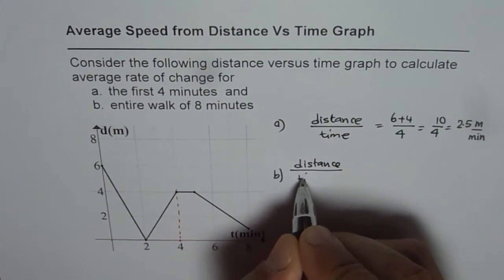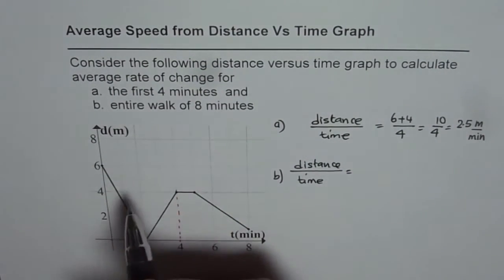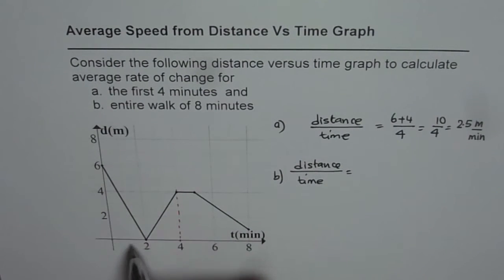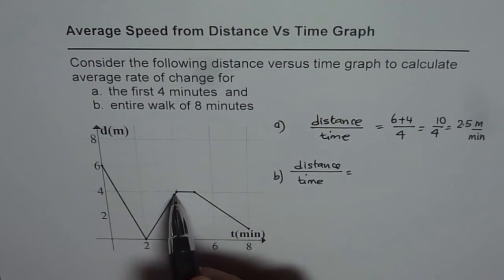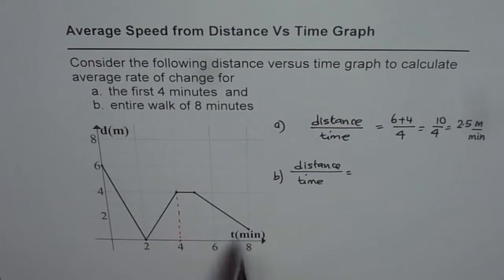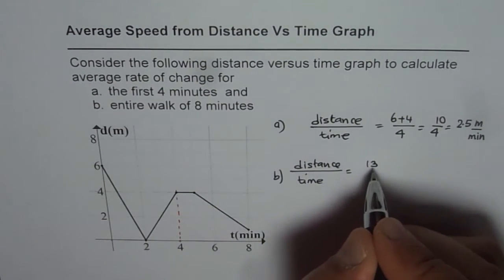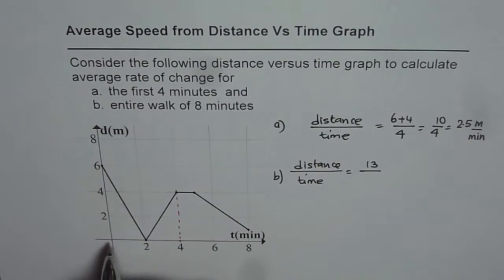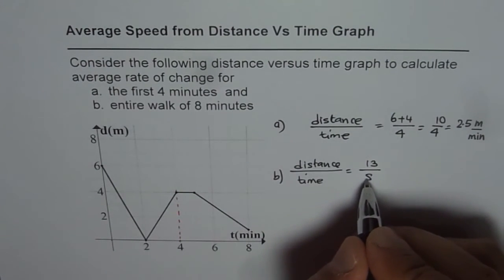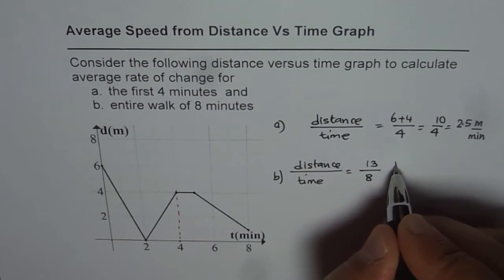It is the same approach: distance over time. Distance is 6 plus 4, which is 10, and then we go down by 3 units. So 10 plus 3 is 13 total distance. Time duration is 8, so it is 13 over 8 meters per minute.